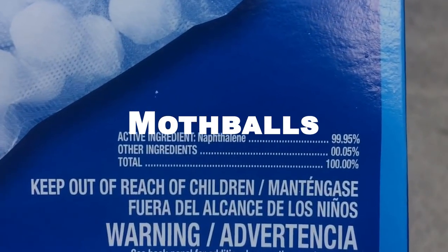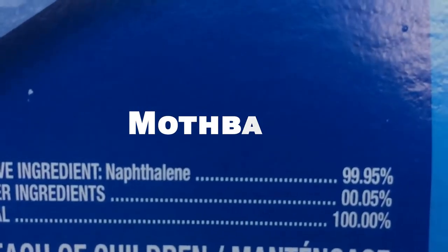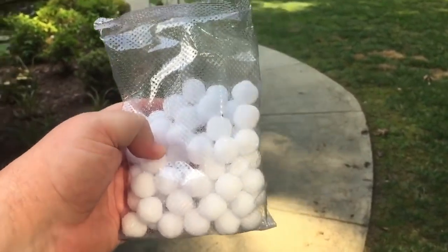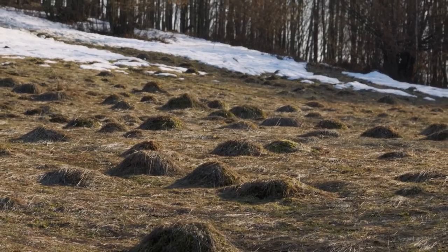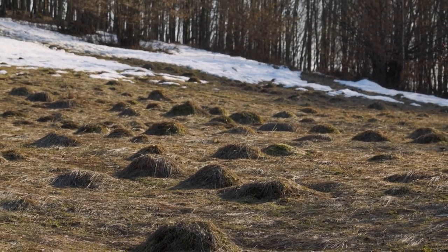Mothballs contain naphthalene, which can repel moles. Place a few mothballs in the mole tunnels or holes. The smell will irritate the moles and cause them to leave the area.